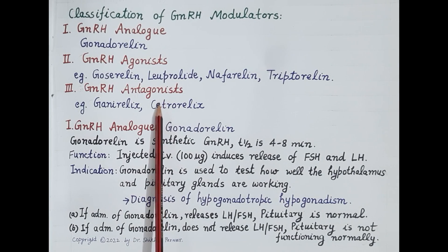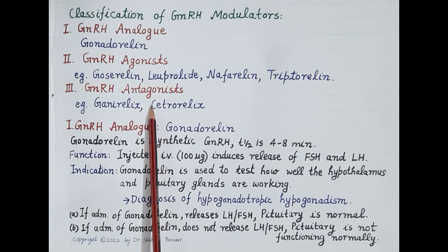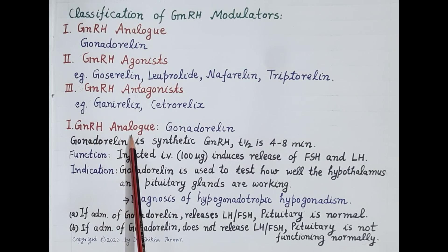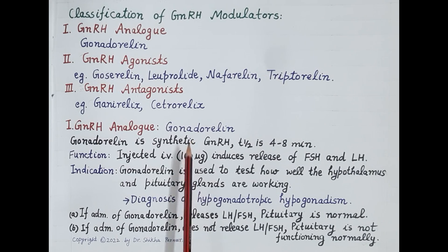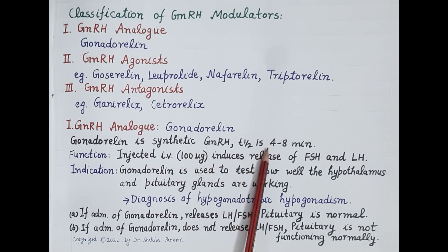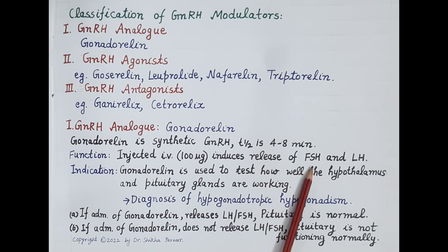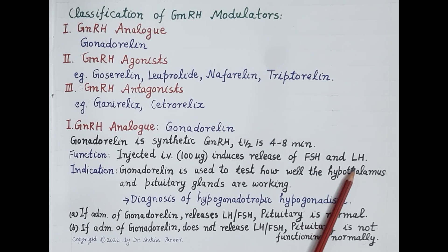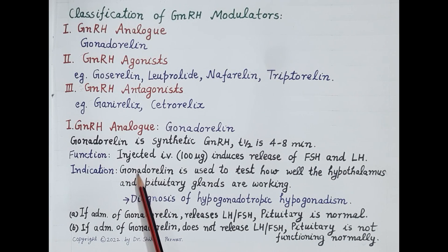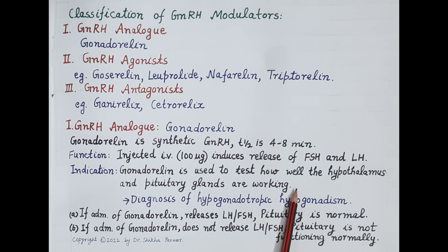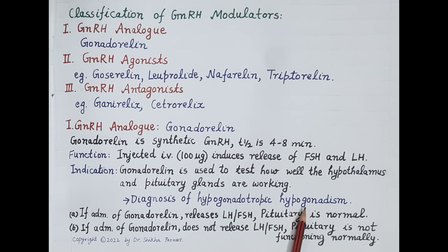Gonadorelin is a synthetic GNRH with a short half-life of 4 to 8 minutes. When 100 micrograms of gonadorelin is administered IV, it induces the release of FSH and LH. The primary indication of gonadorelin is to test how well the hypothalamus and pituitary glands are working. It is primarily used in the diagnosis of hypogonadotropic hypogonadism.